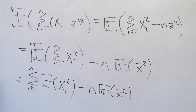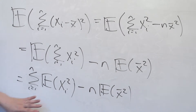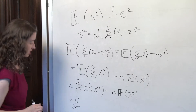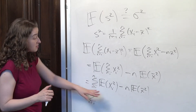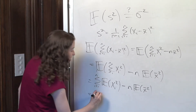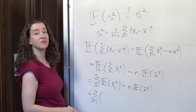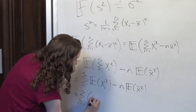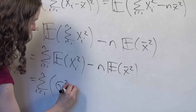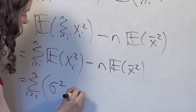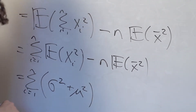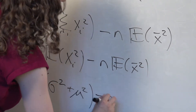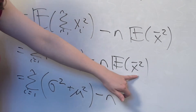At this moment we're going to use the property we derived twice. I've got the sum over all values in the sample of the expected value of xᵢ squared. What is that equal to? It's equal to the variance of xᵢ plus the mean of xᵢ squared — that's what we've shown. So this becomes the sum of (sigma squared plus mu squared) minus n times the expected value of x-bar squared.